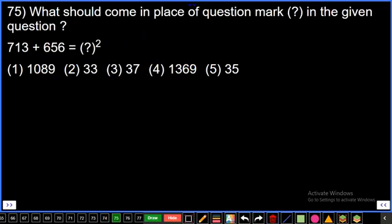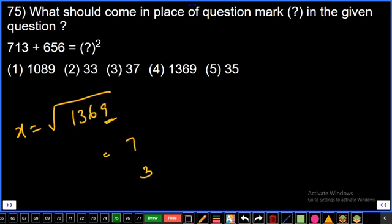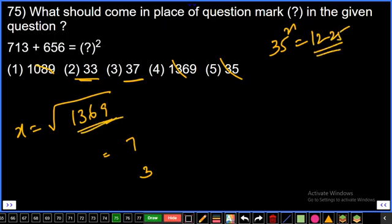Question number 75: 713 plus 656 equals x square. 6 plus 3 is 9, 5 plus 1 is 6, 7 plus 6 is 13. So x square equals 1369. x equals square root of 1369. Last two digits are 9, so answer is 7 or 3. Two options: second and third. 35 square is 1225. 1369 is greater than 1225, so answer must be greater than 35, which is 37. 1369 is 37 square. Third option, final answer. That's it, thank you for all.